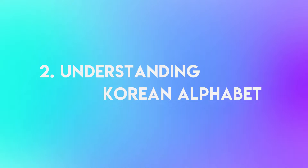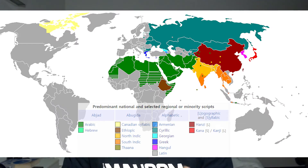Looks confusing? Well, not really. It's actually quite similar to how we type English characters. Korean writing system is regarded as an alphabetic writing system, meaning that the writing system has a phonetic-based property. So each letter represents one sound.